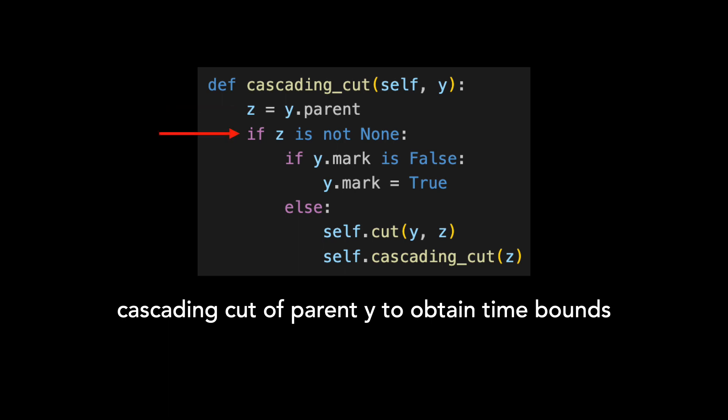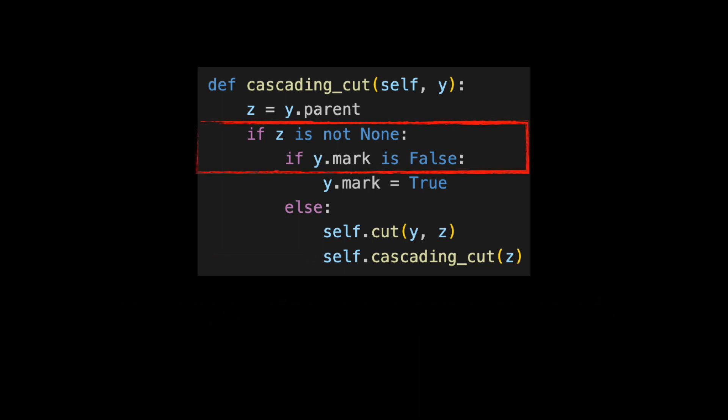We start by grabbing a pointer to Y's parent called Z. If Z is not none, we check the mark on Y, and if it's false, we set it to true. If Y is marked, we call cut, this time with Y and Z, and then execute cascading cut again with Z. You can see the recursive nature of cascading cut. These two lines are our termination points. When Z is none, we've reached the root list. We also stop when we reach an unmarked node.